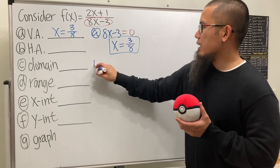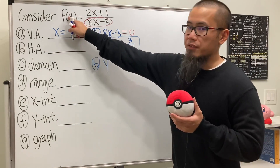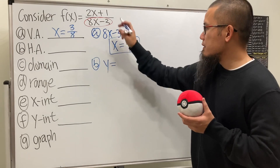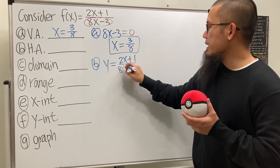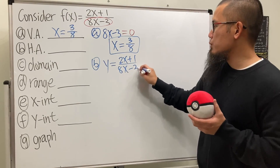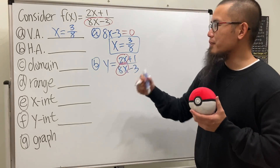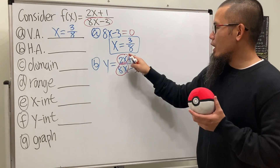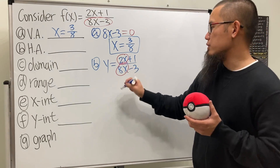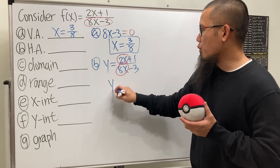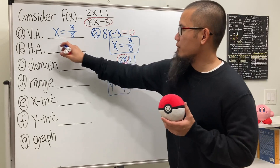Next we have the horizontal asymptote. We let f(x) equal y, so we have y equals (2x + 1) over (8x - 3). For the horizontal asymptote we care about the leading coefficients — the x's cancel out and we get 2 over 8, which is just 1 over 4. So y is equal to 1 over 4.